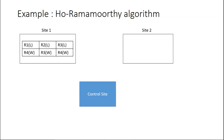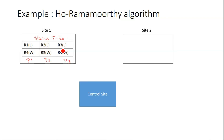Site one has its own status table. The status table for site one includes the resources already locked and for which processes are waiting. Let's say site one has three processes: P1, P2, and P3. P1 has already locked resource R2 and is waiting for resource R3. P3 has already locked R3 and is waiting for R4. R1 is the local resource of P1, R2 is the local resource of P2, and R3 is local for P3.